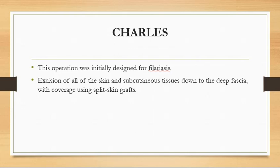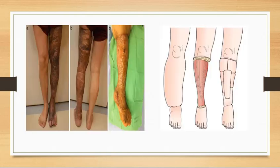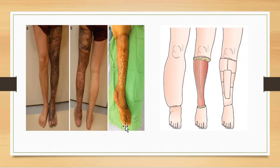Charles' procedure was initially designed for filariasis. All skin and subcutaneous tissue is excised down to the deep fascia, and the area is covered with split-skin grafts. In this example, the entire left lower limb affected by filariasis is treated through staged surgeries: full-thickness skin and subcutaneous tissue is removed, then covered with split-thickness grafts, resulting in the final appearance shown.